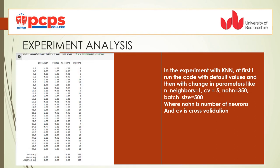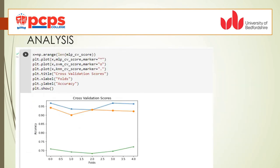In the experiment with KNN, at first I ran the code with the default values and then again with changes in parameters like KNN=1, cross-validation 5, nodes 350, and batch size 500. Here also, nodes is the number of neurons and CV is cross-validation.